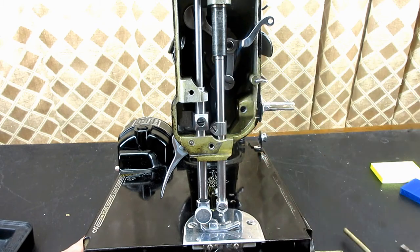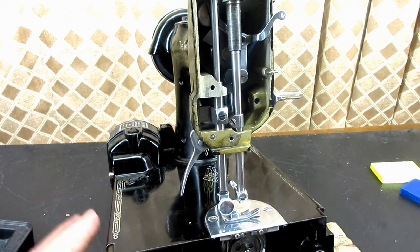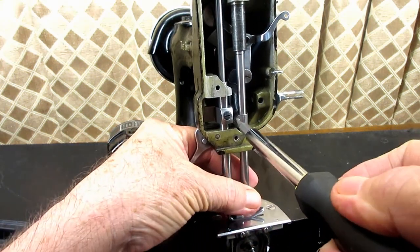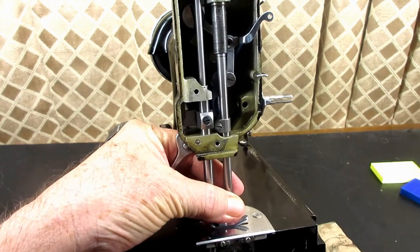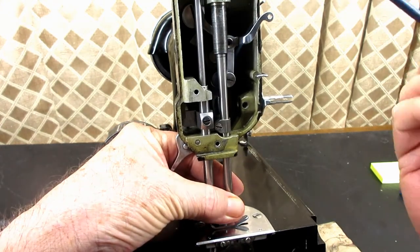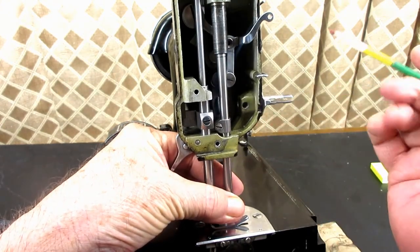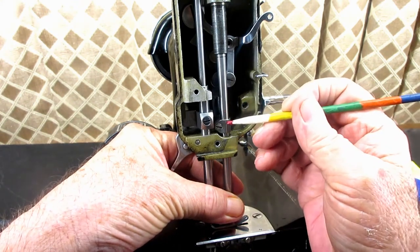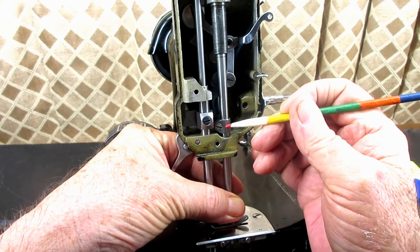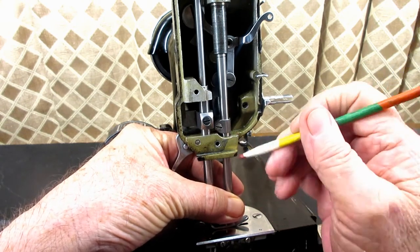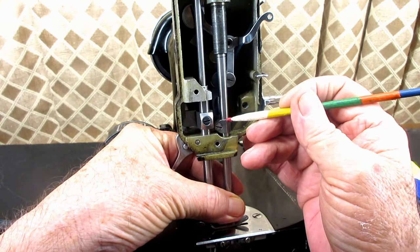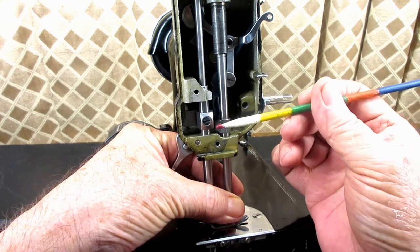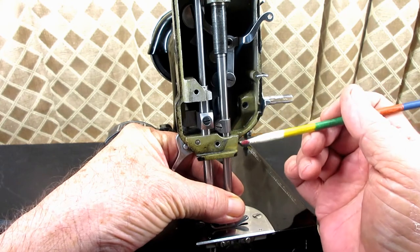When you're setting your height on a 221 Featherweight and you're getting ready to tighten your clamp, you just look at that line on the needle bar and you line it up with this line on the clamp. Forget looking down here or anything - it doesn't matter. You line those two lines up. Let me show you a close-up picture of these two marks.